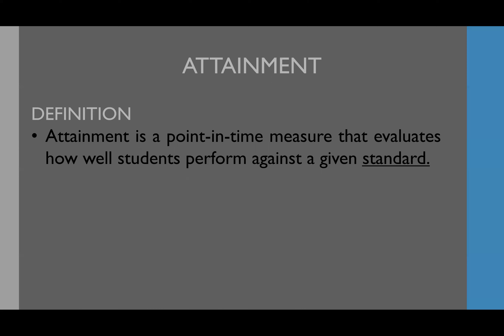Let's start with attainment. What does it mean? Attainment is a point in time measure that evaluates how well students perform against a given standard. When we talk about attainment, we have to understand that it is one evaluation, one assessment, one measurement. We're not comparing — we do not have two different pieces of information. We have only one.